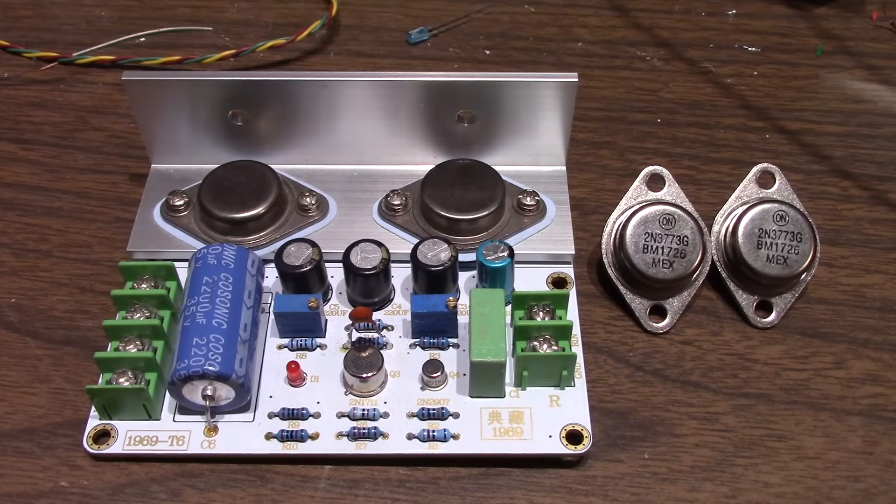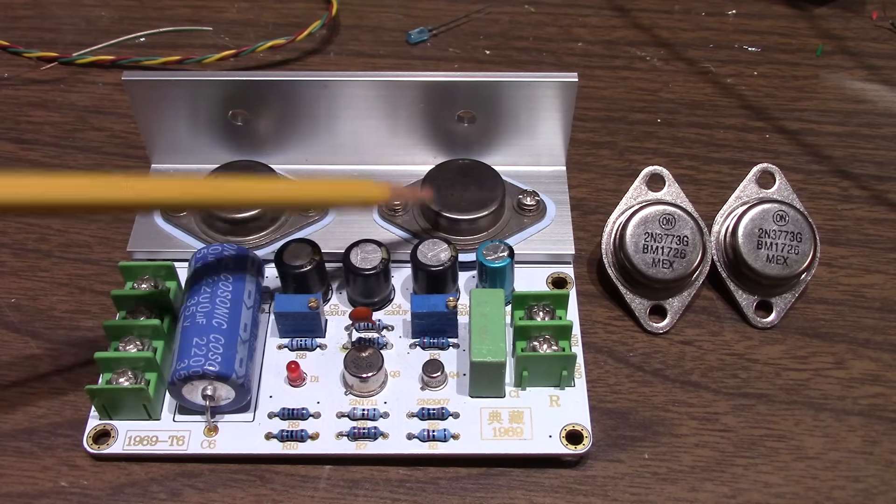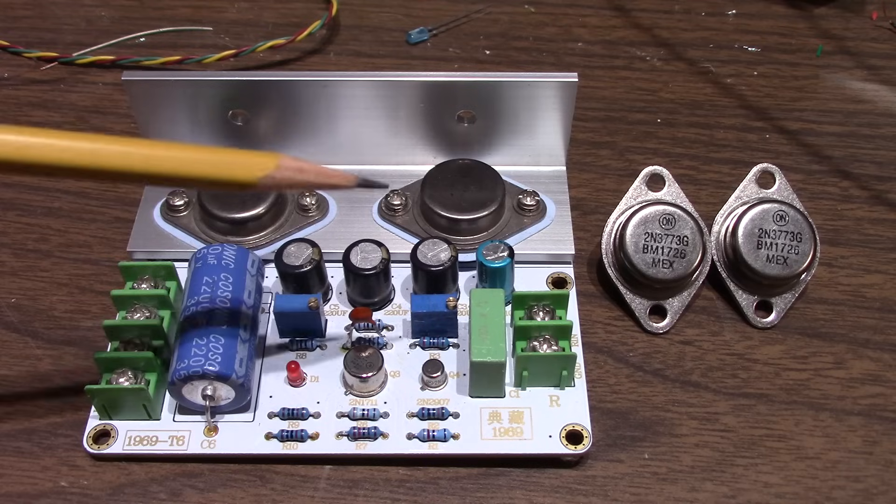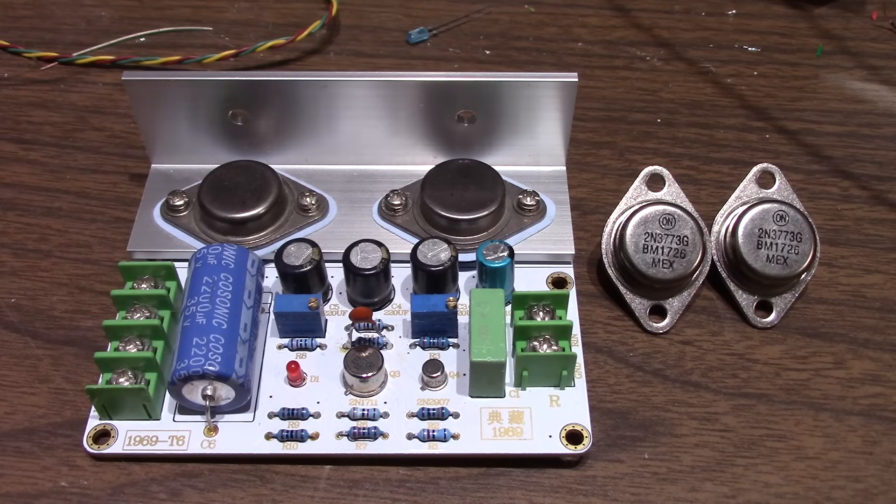So I suggested a couple things but ended up putting the original transistors that came with the kit. And I believe these are fake. They're supposed to be 3055's but for one thing the text flakes off very easily. Pretty typical of these TO3 transistors that are counterfeit. The numbers scrape off easy.